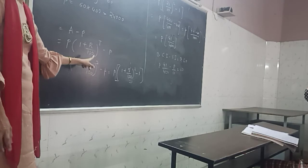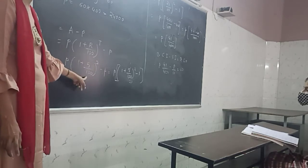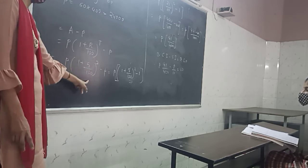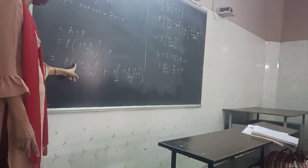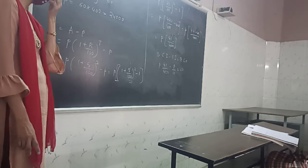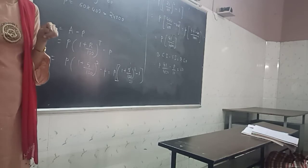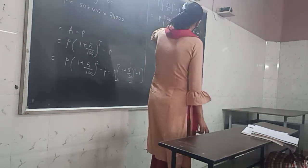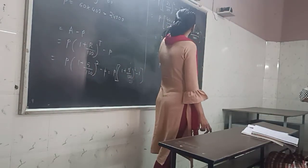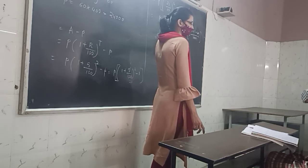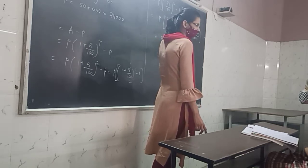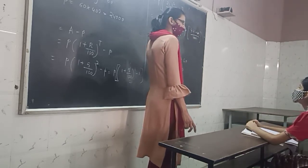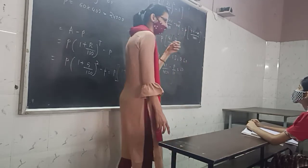Now, divide by P. 5 plus 5? 10. So, 1 plus 1 by 20. Taking LCM, 20 plus 1, 21 by 20. 21 squared? 441 by 400. Now, 441 by 400 minus 1. Taking LCM, 441 minus 400. That is 41 by 400. Because 441 minus 400 is 41.